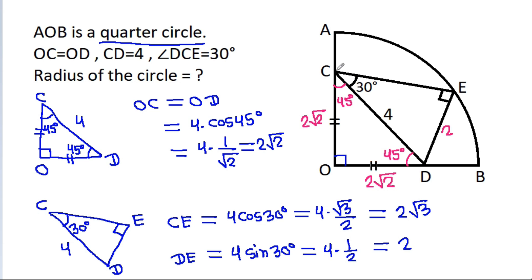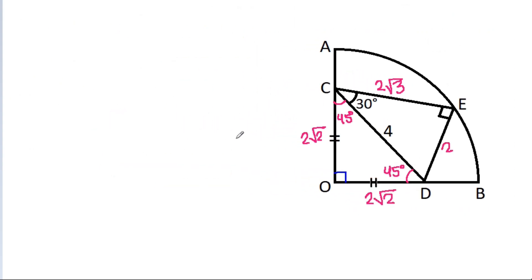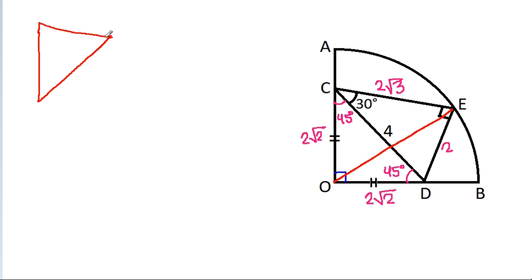So DE is 2 and CE is 2√3. Now if we join OE, then in triangle OCE: CE is 2√3, OC is 2√2. This angle is 45 degrees, and this angle is 45 degrees plus 30 degrees, which equals 75 degrees.